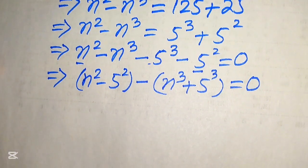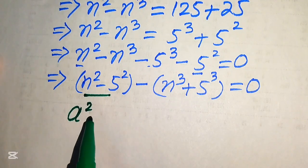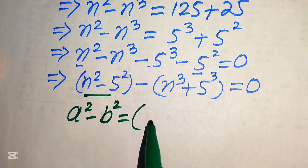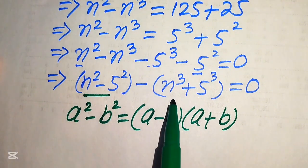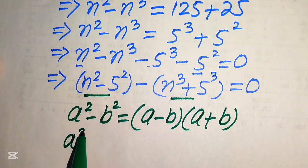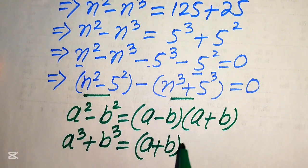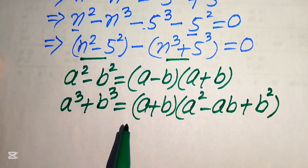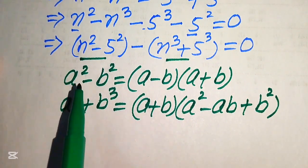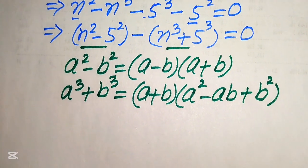In the next step, we apply the difference of squares formula: a squared minus b squared equals (a minus b)(a plus b), and the sum of cubes formula: a cubed plus b cubed equals (a plus b)(a squared minus ab plus b squared). We need these two formulas to expand our equation.